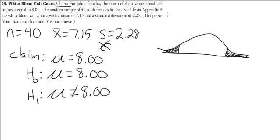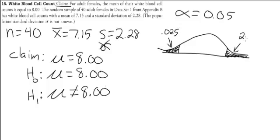How do we know how big the rejection regions are? They always have to add up to our alpha level. Since the question didn't specify, we assume the standard alpha of 0.05, so each tail is 2.5%. Now we can figure out the critical values. Since the population standard deviation is not known, we use a t-distribution.